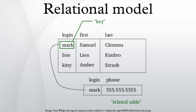Interpretation: To fully appreciate the relational model of data it is essential to understand the intended interpretation of a relation. The body of a relation is sometimes called its extension. This is because it is to be interpreted as a representation of the extension of some predicate, this being the set of true propositions that can be formed by replacing each free variable in that predicate by a name. There is a one-to-one correspondence between the free variables of the predicate and the attribute names of the relation heading. Each tuple of the relation body provides attribute values to instantiate the predicate by substituting each of its free variables. The result is a proposition that is deemed, on account of the appearance of the tuple in the relation body, to be true.